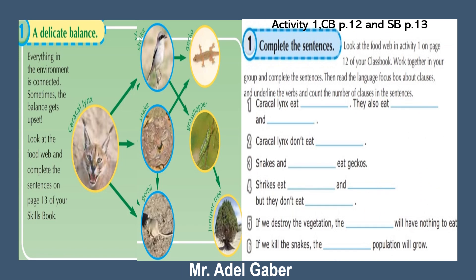Look at your class book page 12 and your skills book page 13. Read the title at the top of page 12 of your class book. Yes — 'A Delicate Balance.' Everything in the environment is connected; sometimes the balance gets upset. Look at the food chain.